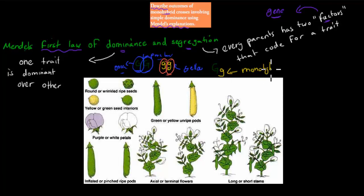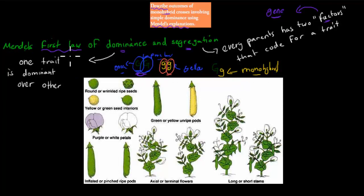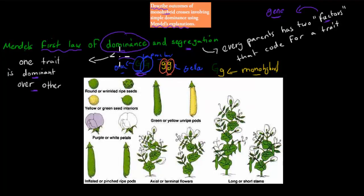So it's a mixture of the two. That was the first part - segregation - which just means that two factors code for each trait. The other part is the dominance: one trait is dominant over the other. The capital letter usually stands for dominant, so big G is the dominant one. Because there are two big Gs in the purebred, the actual plant will be green.